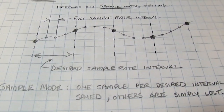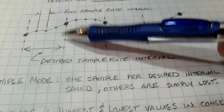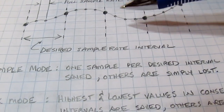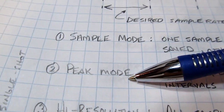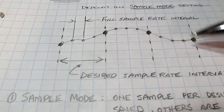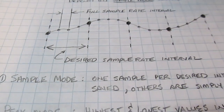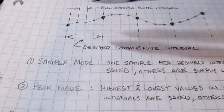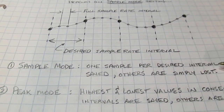Decimation works really well and is fast and easy to implement. The problem is that you might throw away points that would hide a glitch or something like that. So there's another sample mode called peak mode or peak detect mode, which looks at sample intervals and saves the highest and lowest values in each interval. That way you'll know if there was a glitch or a peak that you might want to look at more closely.